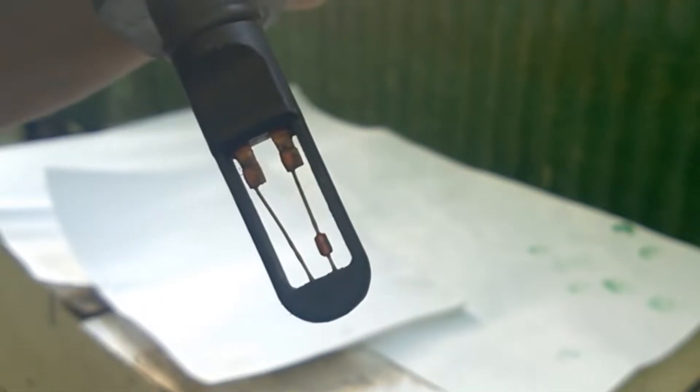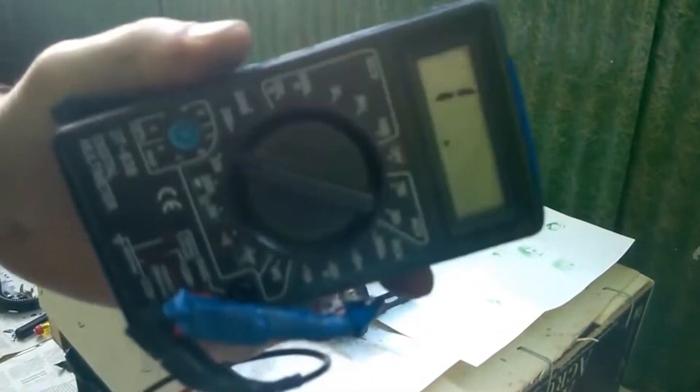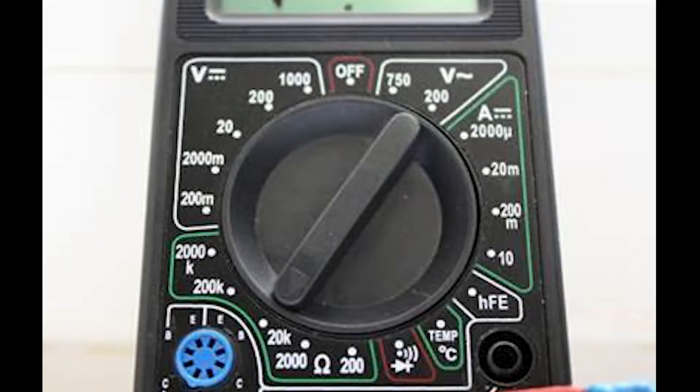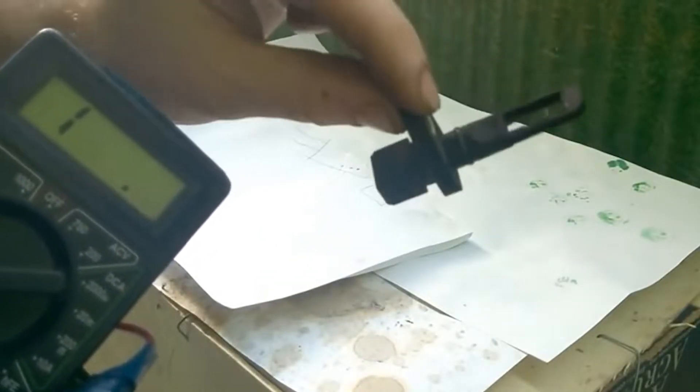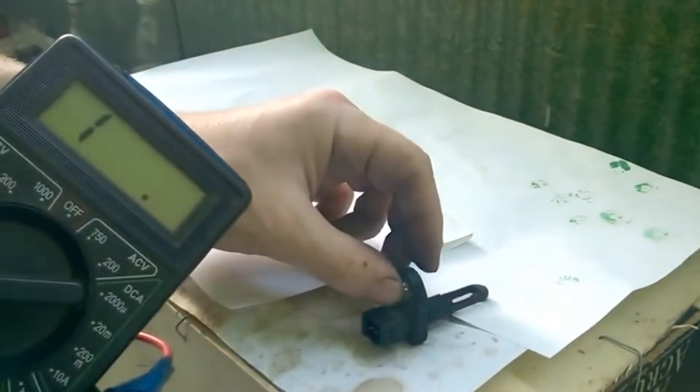To check the sensor, grab a multimeter or any measuring device and set the measurement limit to 200 kilo ohms. The sensor's resistance should vary depending on the ambient temperature.